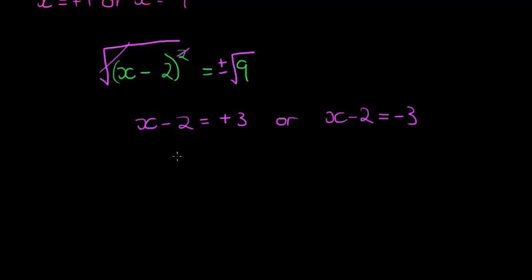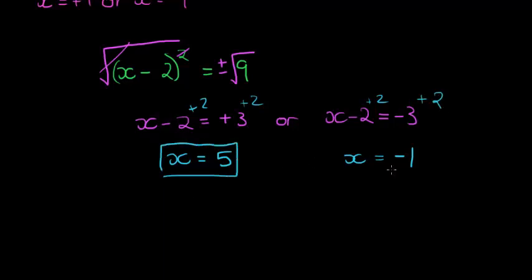But the bracket could have been a plus 3 or a negative 3 so that when I square it, I get 9. Now what I can do is simply solve. I can say x is equal to, what minus 2 will give me 3? Well, 5 minus 2 is 3. And this one, what minus 2 will give me negative 3? Well, negative 1 minus 2 will give me negative 3. Or I could have just added a 2 on both sides. And that would have also given me these answers. There I have the answer to this equation. Again, two answers because my x essentially has a square.